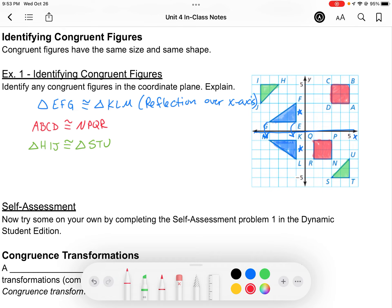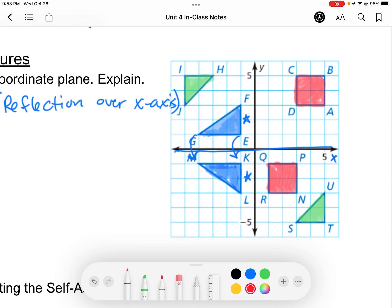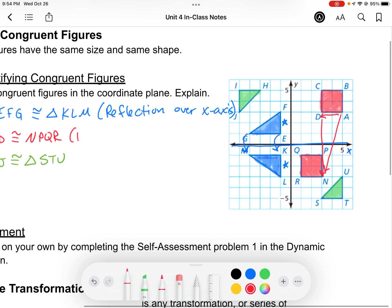And then, let's look at the squares. Is there a transformation that would turn square ABCD into square NPQR? Well, hopefully you realize that would be a translation. All I have to do is move this to the left two, down six. So this would be a translation to the left two, down six.